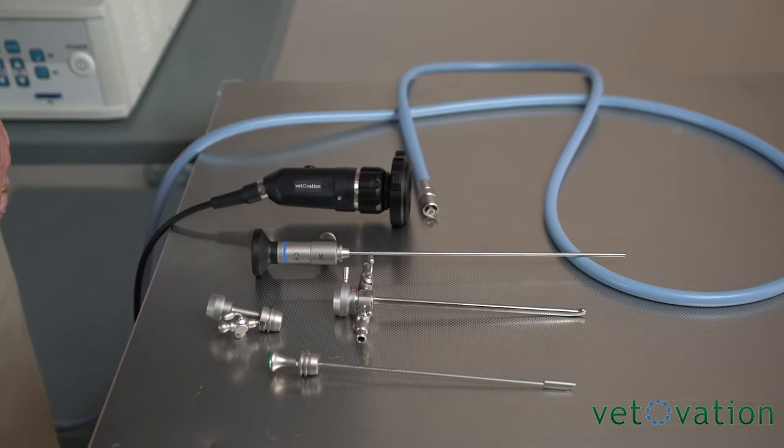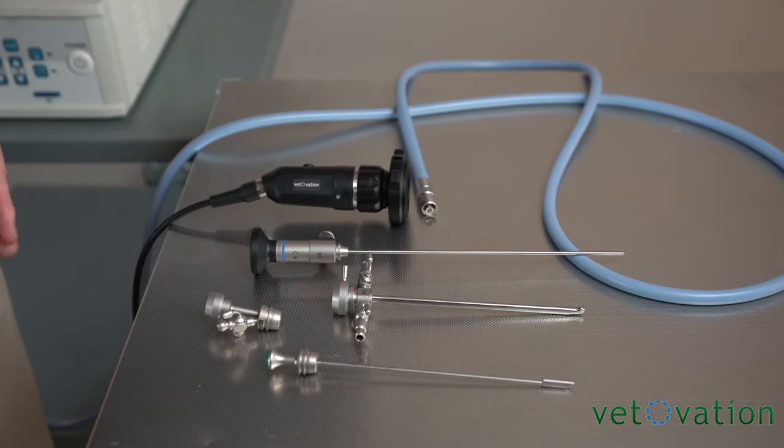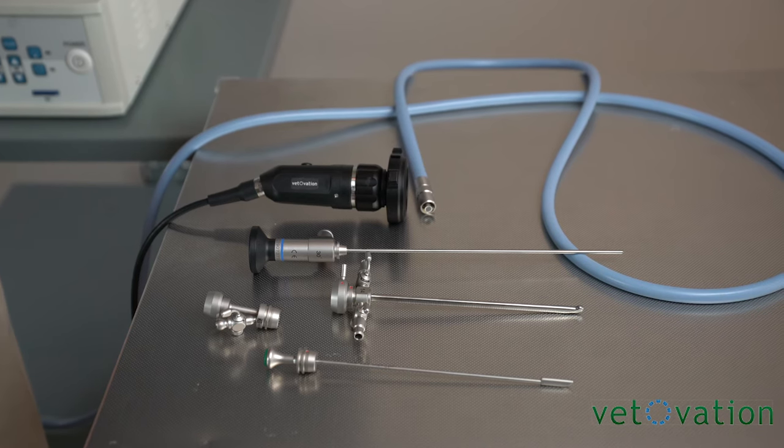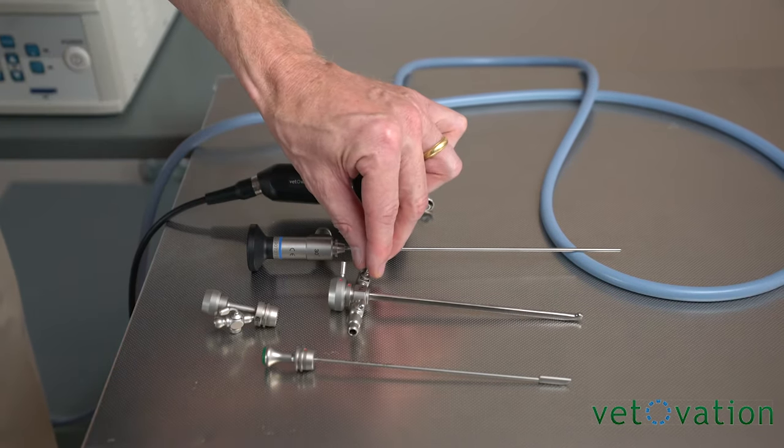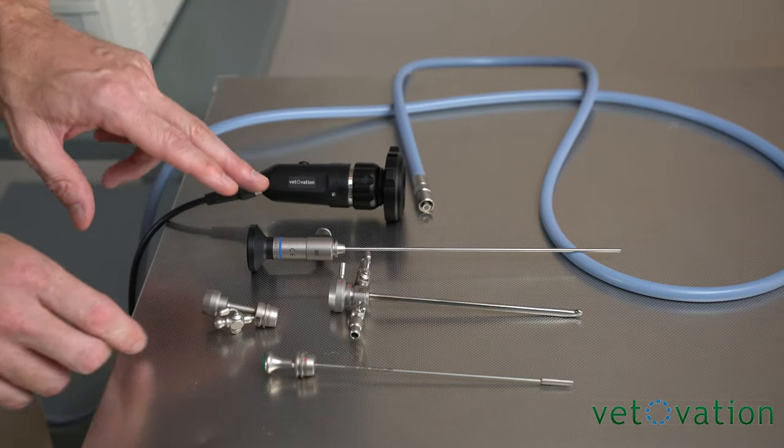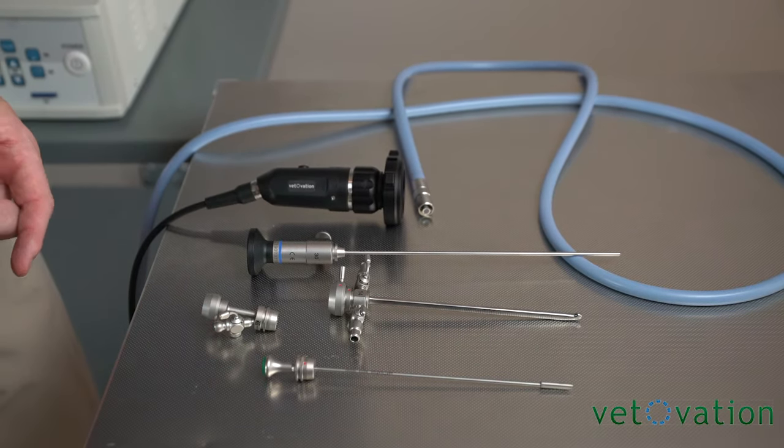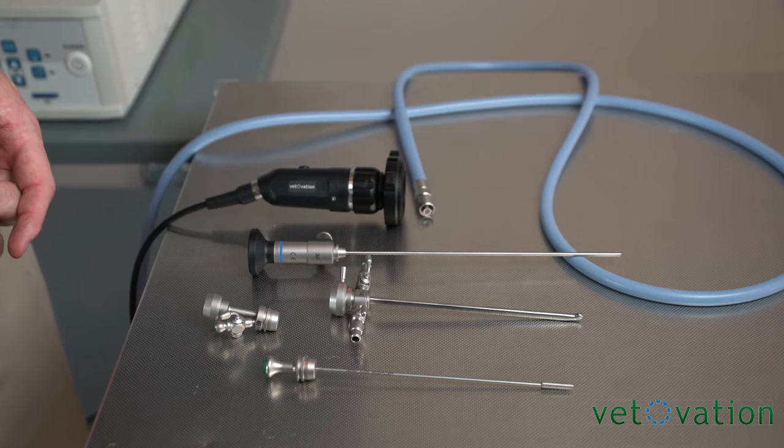The multi-purpose scope is frequently used for rigid rhinoscopy or cystoscopy. The system comes with a shaft, an obturator, a bridge, and a scope that is either available in a zero degree or a 30 degree.